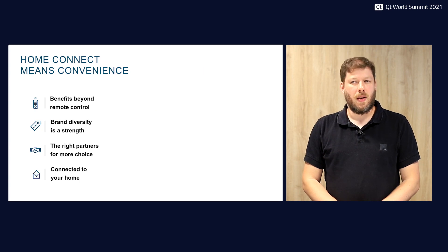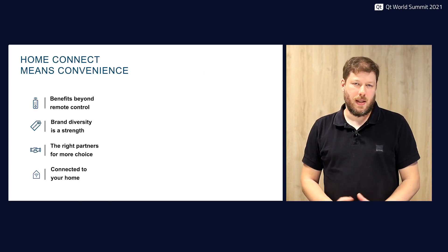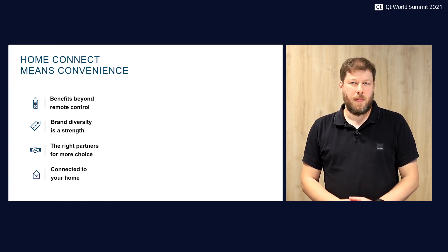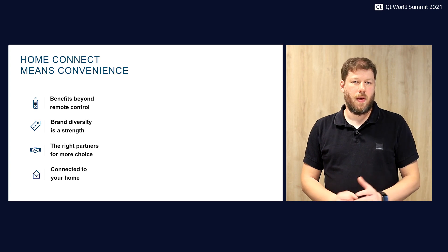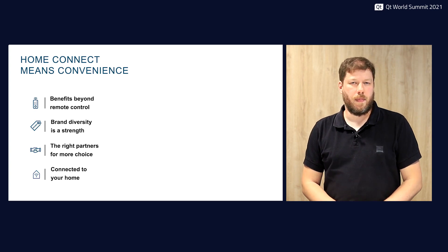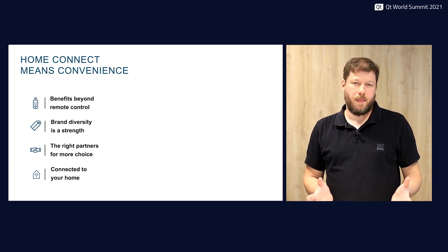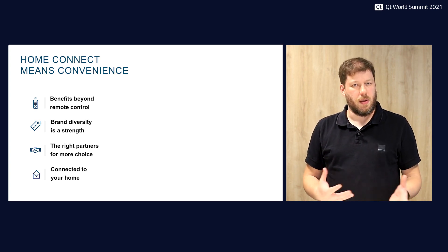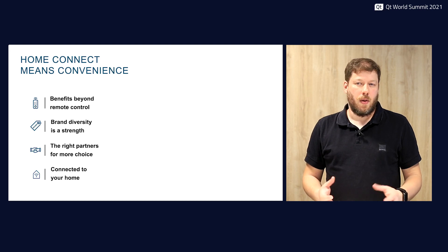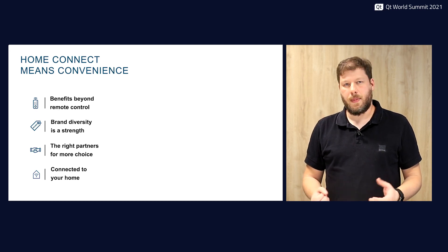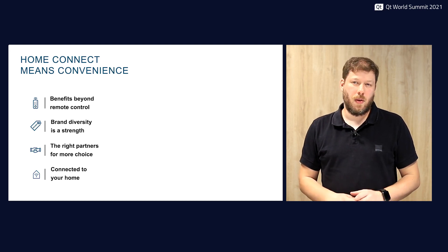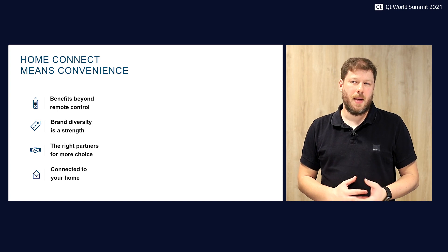HomeConnect is our ecosystem brand for connected devices. We have been selling connectable products since 2014. With the HomeConnect app, you can monitor and control connected appliances from almost all BSH brands and categories in just one app. To date we have sold approximately 8 million connected devices.